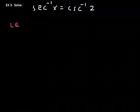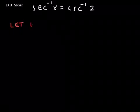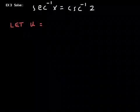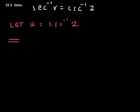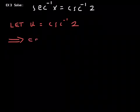I'm going to suggest that we let some letter, let's just say u. It doesn't have to be u, okay? But let u equal inverse cosecant of 2, the right-hand side of that equation. That would imply that cosecant of u is equal to 2.